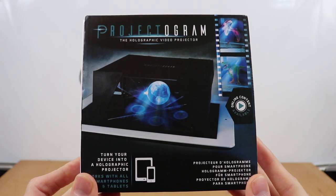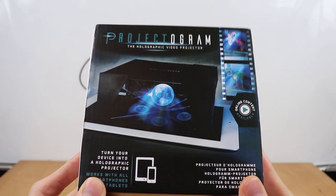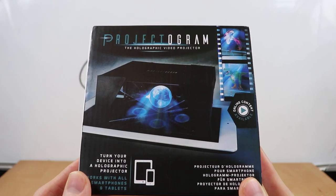This is the Projectogram. The Holographic Video Projector. You can buy this for about £7.50 on eBay. So I don't know if you'd consider that cheap tech.